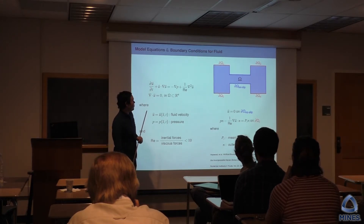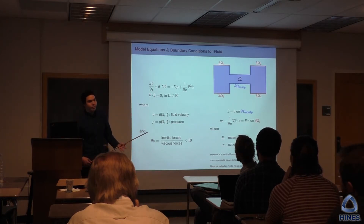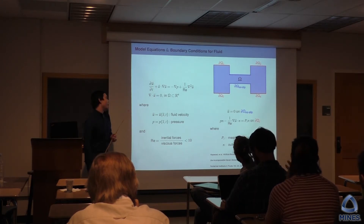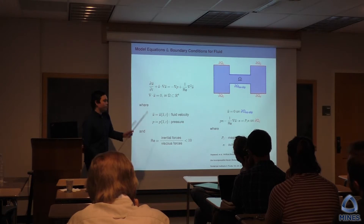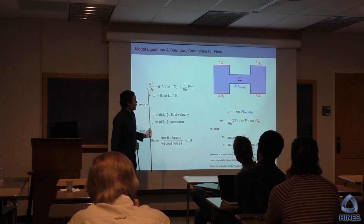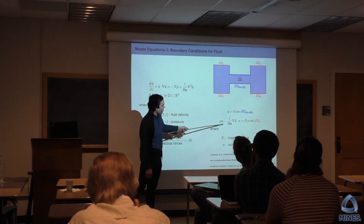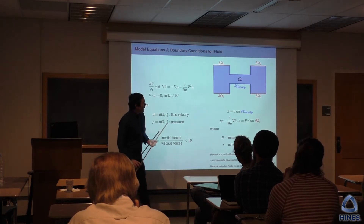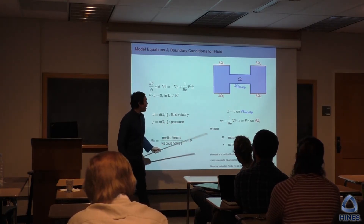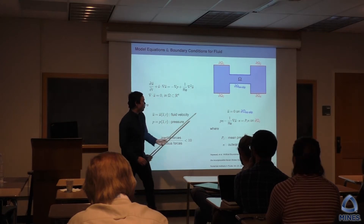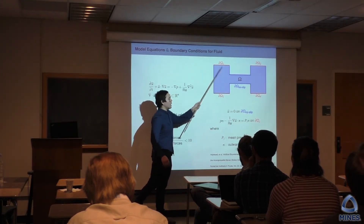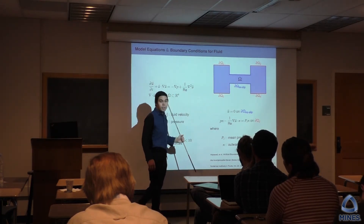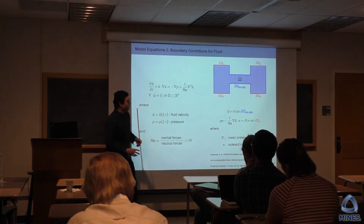One challenge was that the experiment specifies pressures but you solve for velocity. So how do you incorporate pressure boundary conditions? We use a pseudo-traction boundary condition — like a Neumann condition for the momentum equation — found in a paper by Haywood. You require mean pressure on the inlets and outlets of your domain. For the walls, we assume a no-slip condition — velocity is zero on the walls.